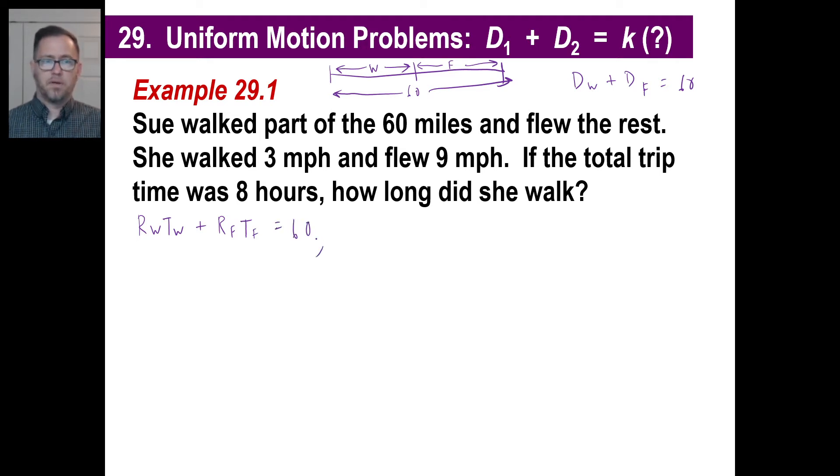She walked three miles an hour. So our rate of walking is three. She flew nine miles per hour. The rate of flying is nine. Now we've got a distance, we have rates. Now we're missing a time. The total trip time was eight hours. Then the time of walking plus the time of flying is equal to eight. And there we go, we got it.